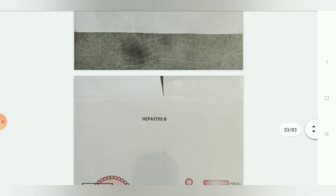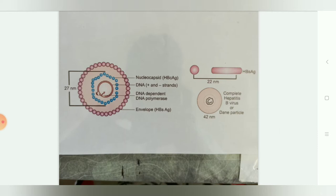The next topic is Hepatitis B. This is the viral diagram of Hepatitis B showing the nuclear capsid, HBc antigen, DNA with positive and negative strands, DNA-dependent DNA polymerase, and the envelope with HBs antigen.